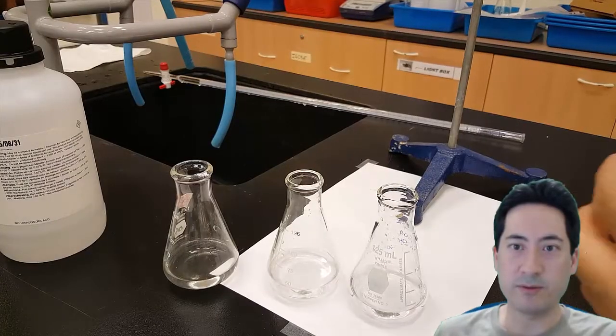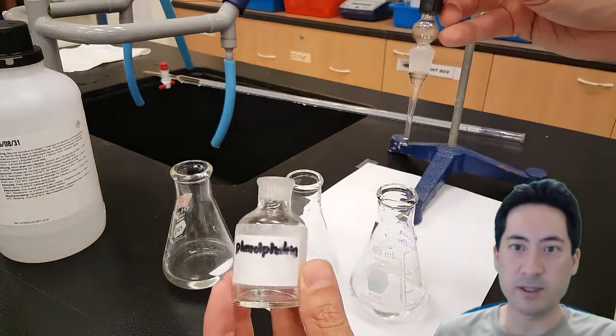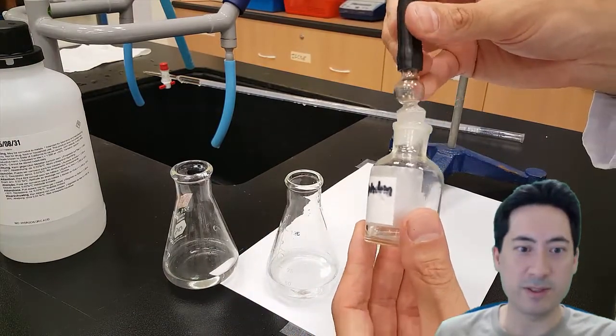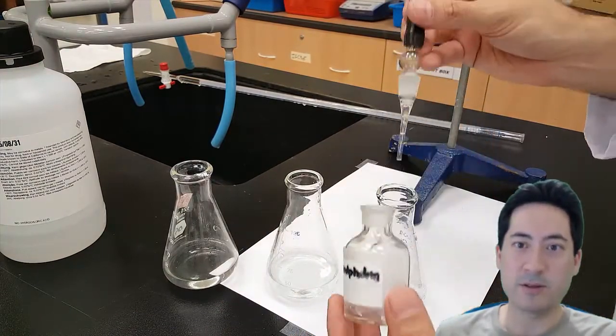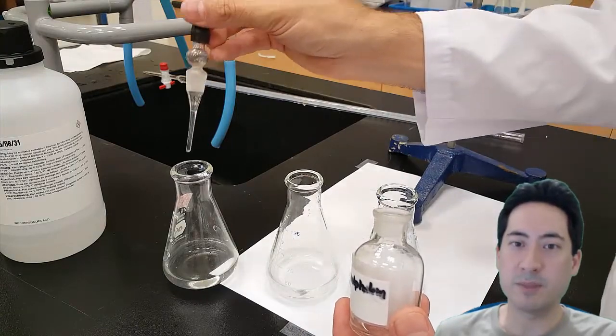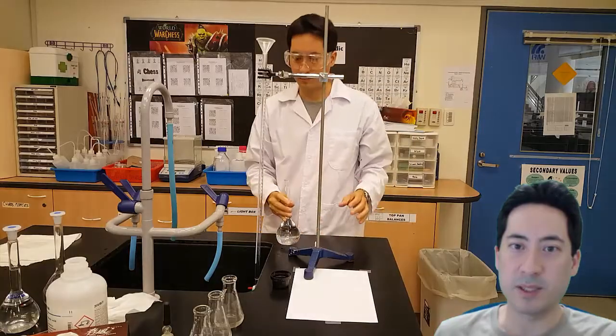So I've added 3 drops of phenolphthalein to each of these conical flasks. Don't forget to do that, it's quite painful when I see students do that. That's to make sure the solution goes pink once it's been neutralised and starts to become basic.